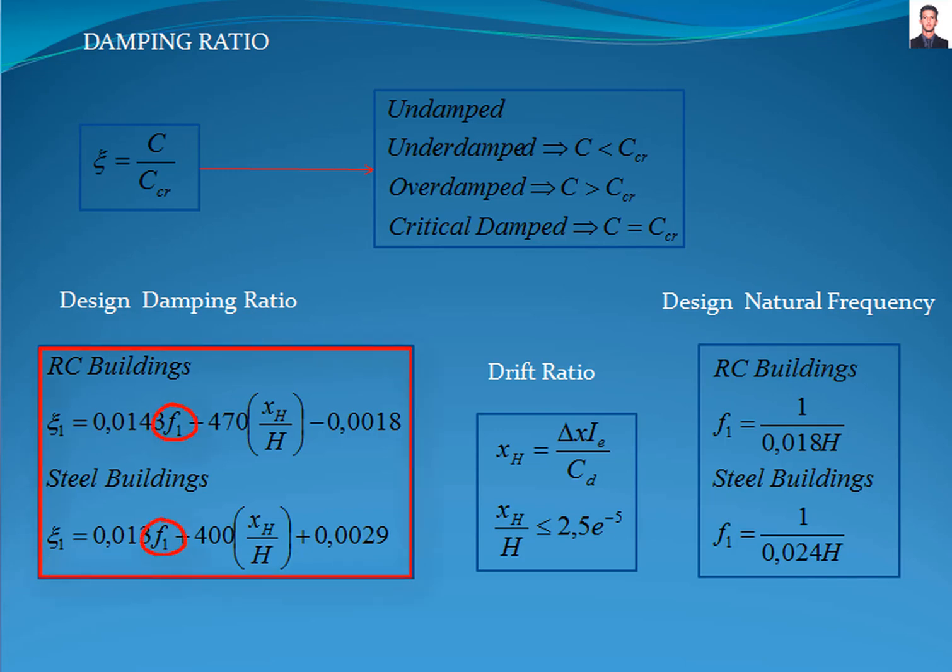Where f1 is the natural frequency in the first mode of vibration, calculated for the elastic range. For RC buildings, f1 = 1/(0.0181H), and for steel buildings, f1 = 1/(0.024H), where H is the building height and the allowable drift is from Table 12.12-1 according to the American Society of Civil Engineers standard, depending on type and risk category.